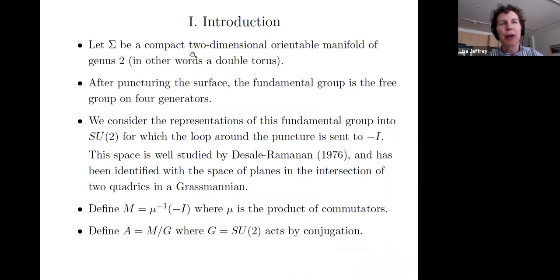Sigma will be a compact two-dimensional orientable manifold genus 2, in other words, a double torus. So first we puncture the surface, and then the fundamental group is the free group on four generators. We consider representations of this fundamental group into SU(2), for which the loop around the puncture is sent to minus the identity element, which is the center of SU(2), the generator of the center of SU(2). We define M, which is the pre-image of minus the identity element under the product of commutator map.